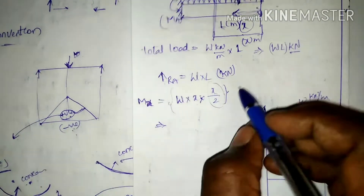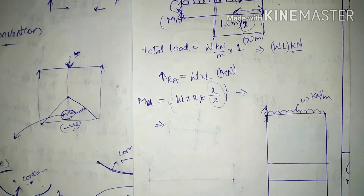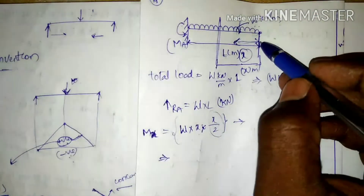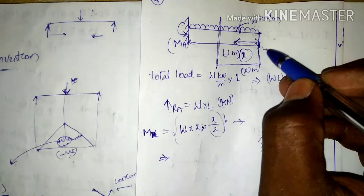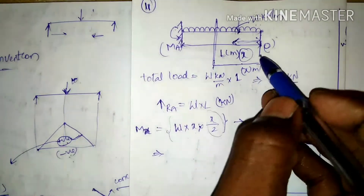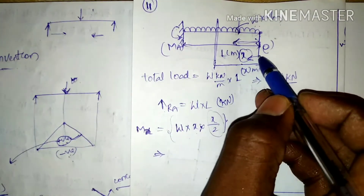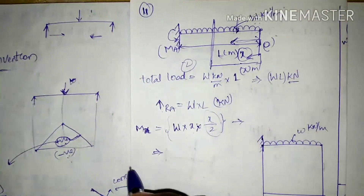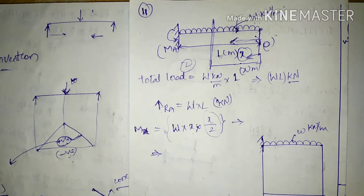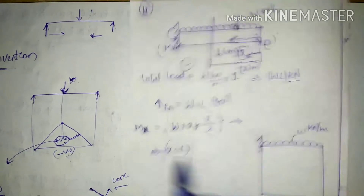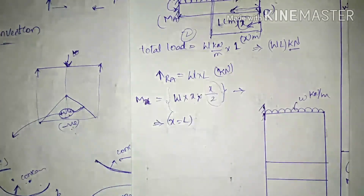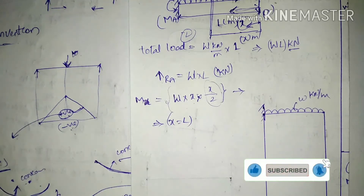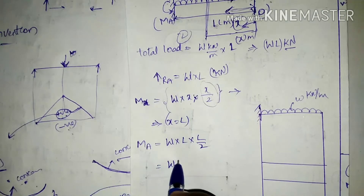There are two conditions: at X equals 0 (free end) and at X equals L (fixed end). Moving from the free end toward the fixed end, X increases up to L. Substituting X equals L gives the maximum bending moment as WL²/2.